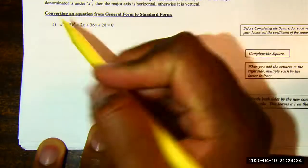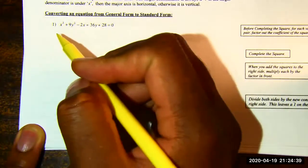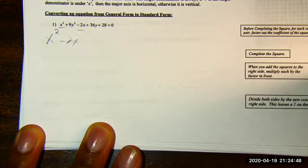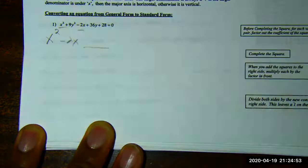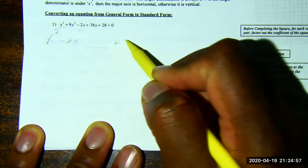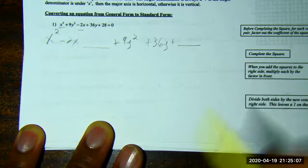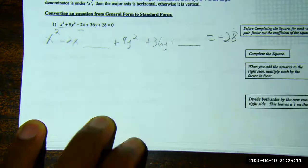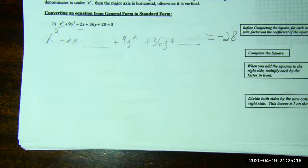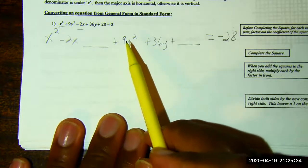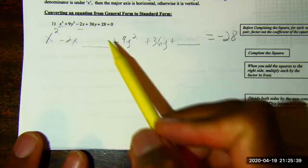So I'm gonna complete the square of both the x values and the y values. I'm completing the square twice. It's foci. So what I'm gonna do is I'm going to organize my x values and y values.